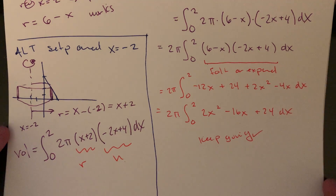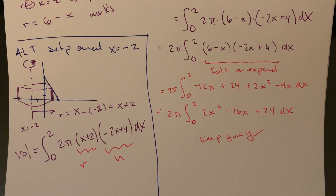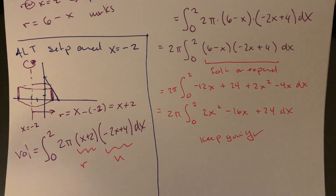You can do these setups for rotation around horizontal lines as well. For a shells technique with a horizontal axis of rotation, you'd need to rewrite the function as x equals something and use a y interval — flip the variables around. The radius gets impacted the same way: instead of just being the y value, it becomes y minus something or y plus something. The height would be unchanged.